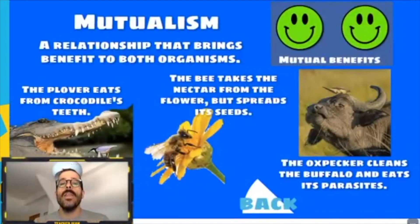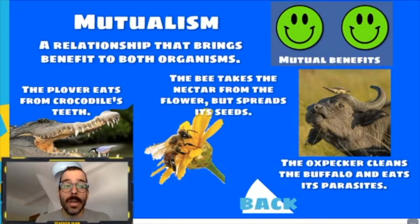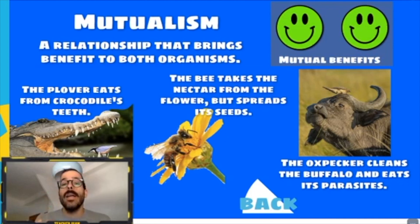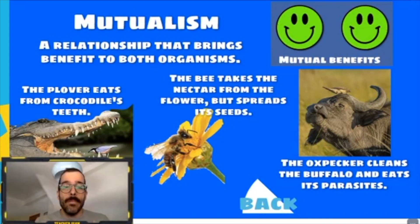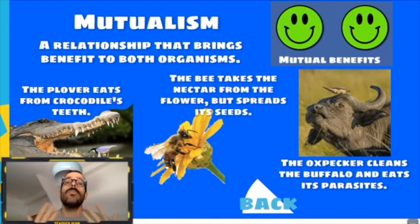The third relationship is mutualism — a relationship that brings benefit to both organisms. Here we can see a crocodile and a plover bird that eats the remaining meat from the crocodile's teeth, so both benefit. In another example, a bee takes nectar from a flower, and in doing so helps the flower spread its seeds so it can reproduce — both organisms benefit.